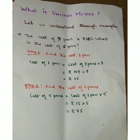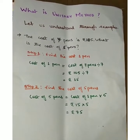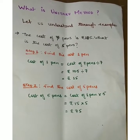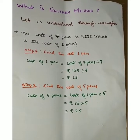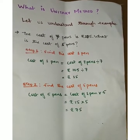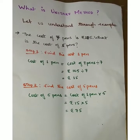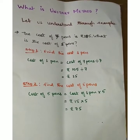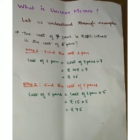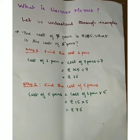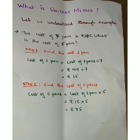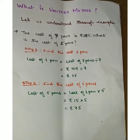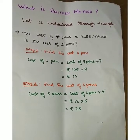Here, the cost of seven pins is given and we have to find out the cost of five pins. For finding the cost of five pins, we first have to find the cost of one pin. Step one: find the cost of one pin, that is 105 divided by 7, which gives you 15.